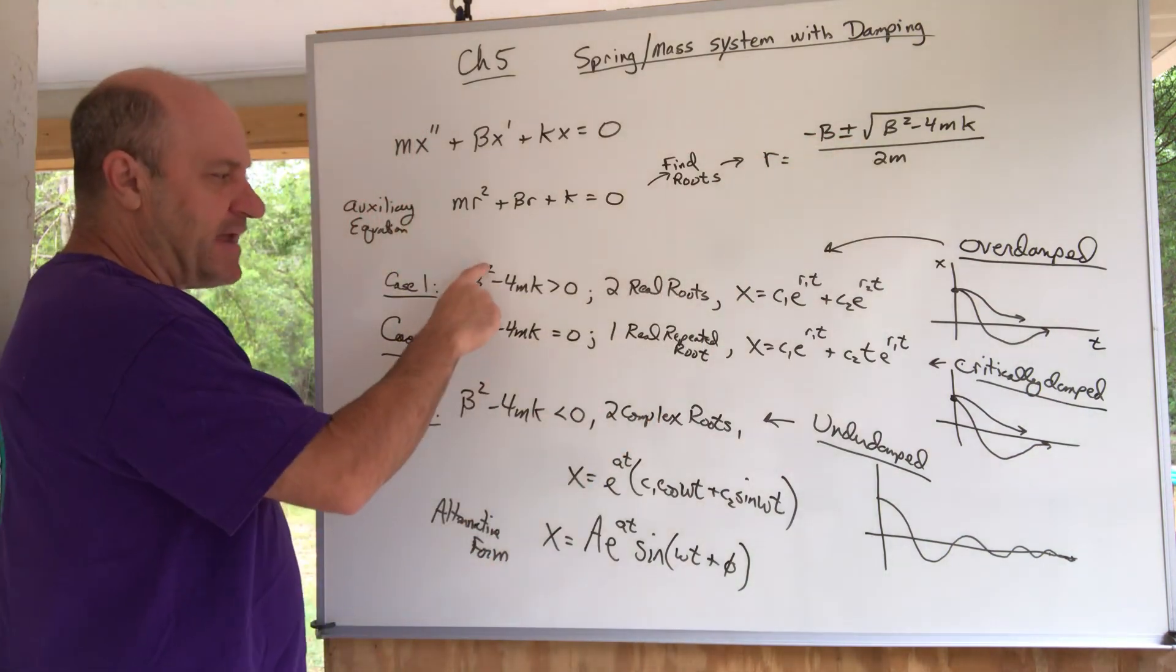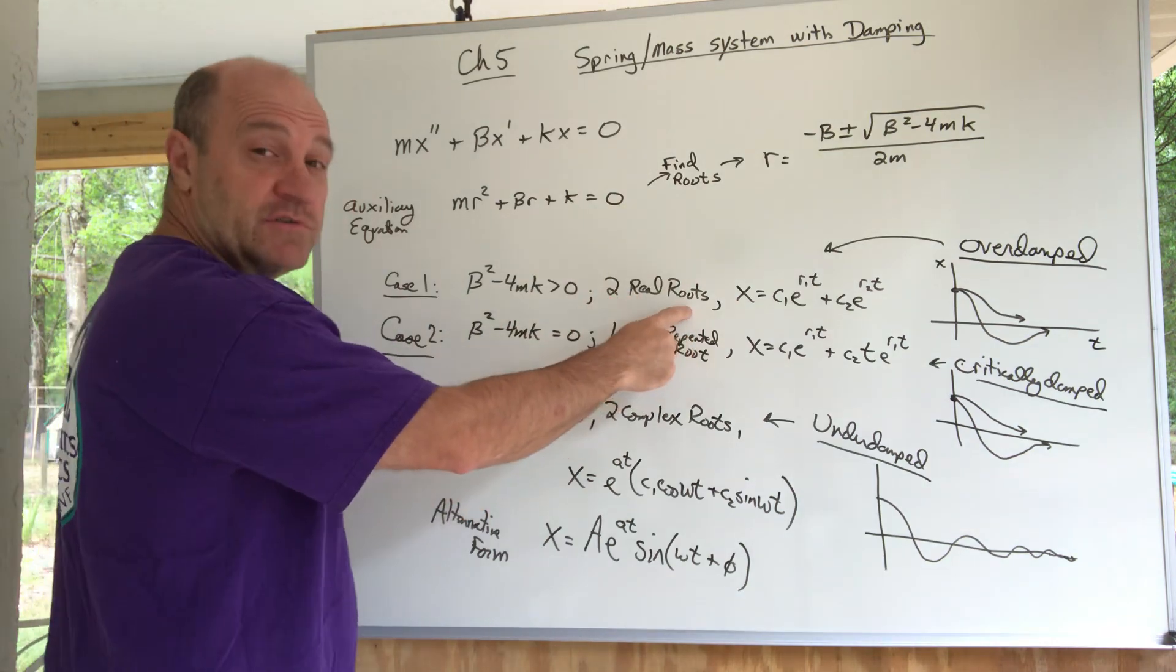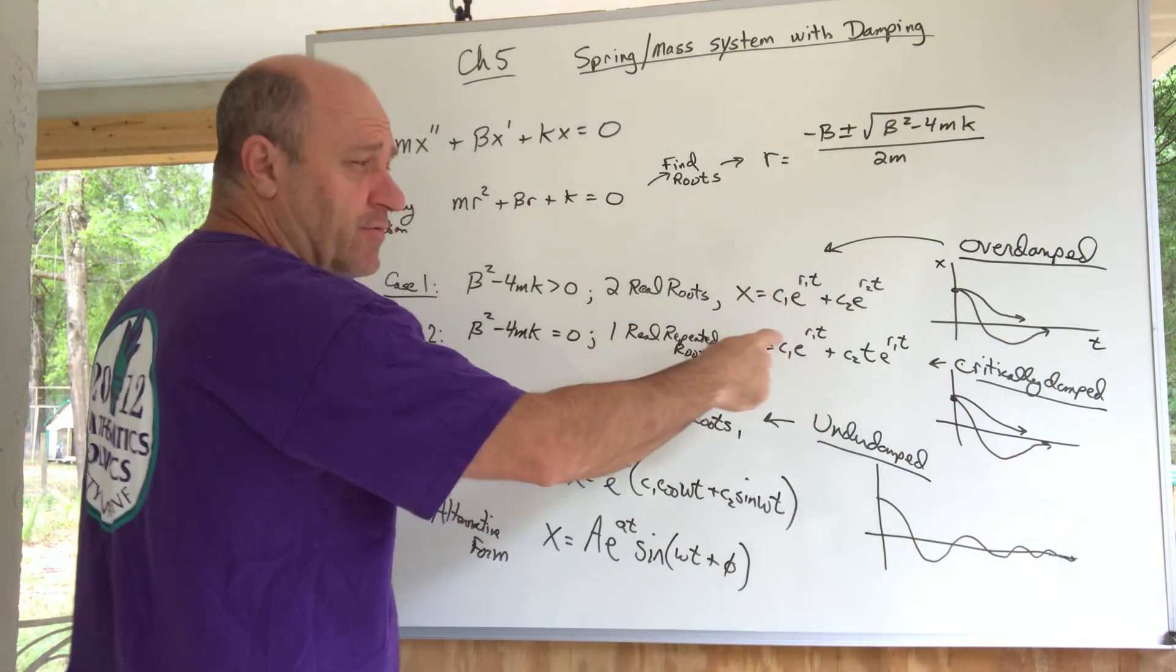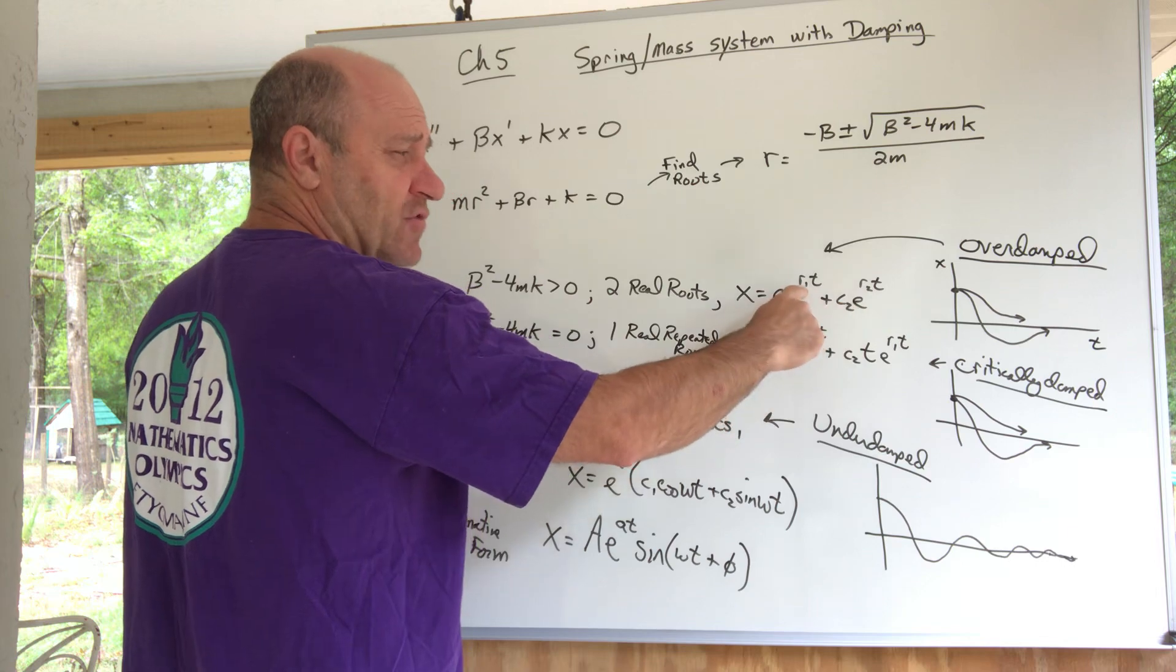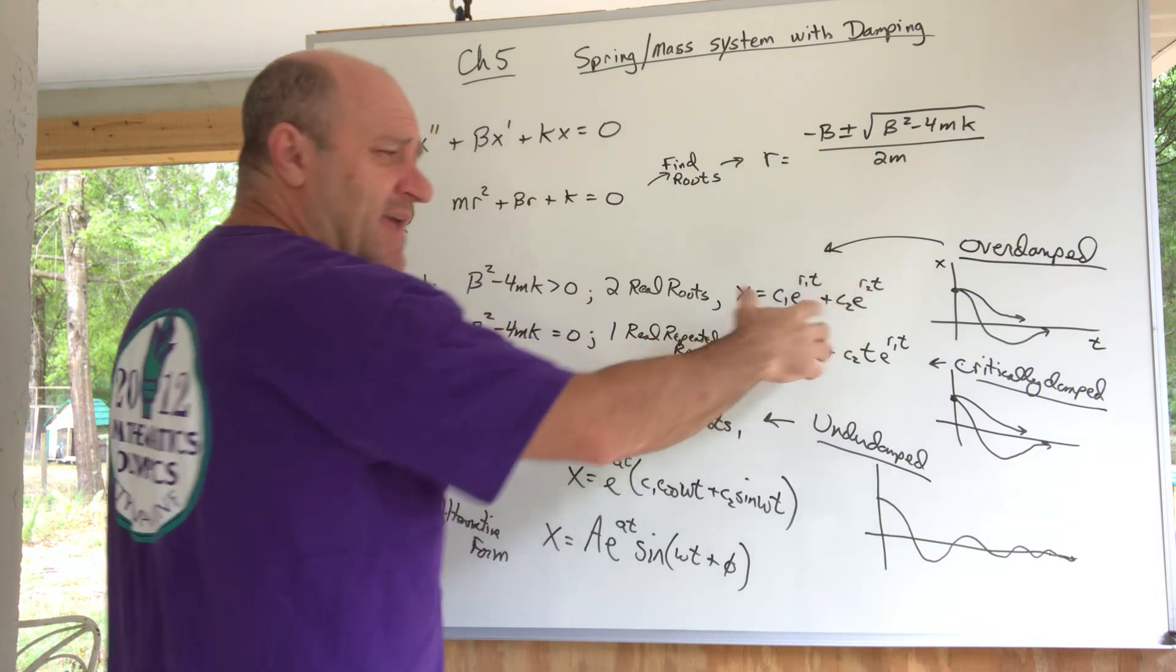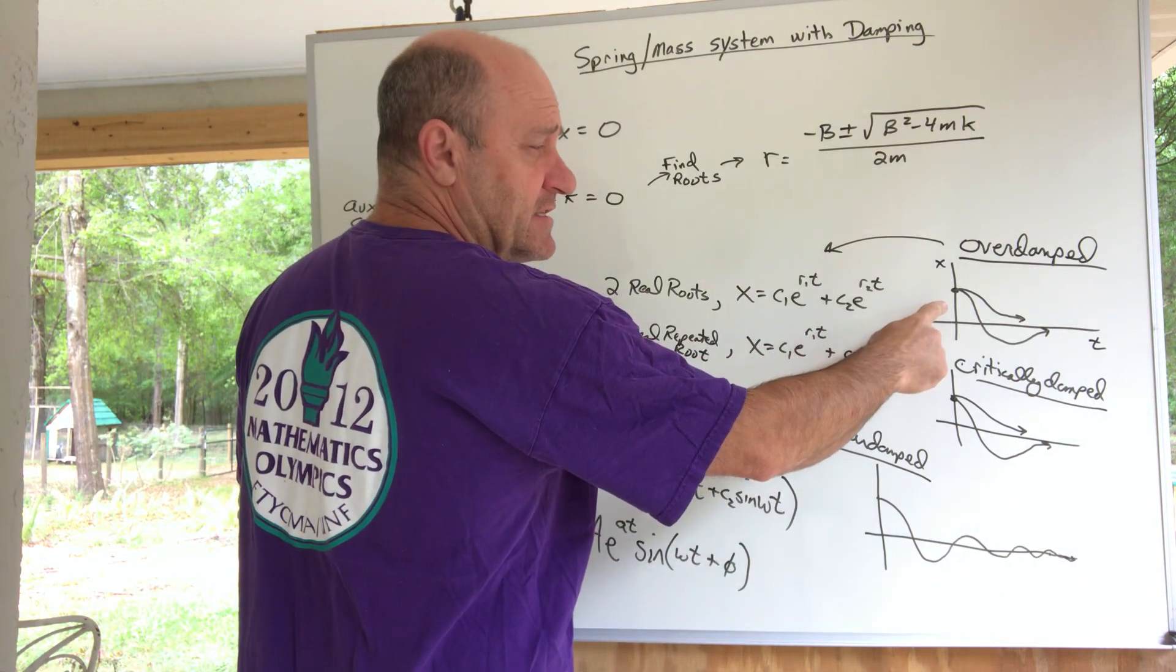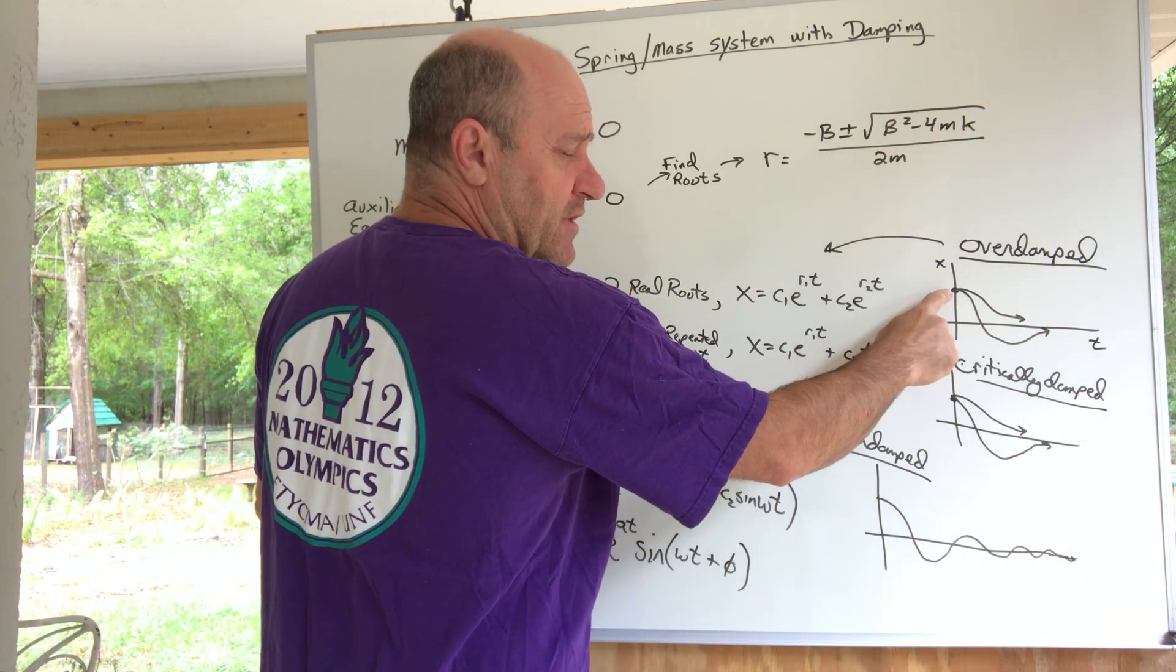If the discriminant of the quadratic formula, beta squared minus 4mk, is positive, that's going to lead to two real roots. If you have two real roots, you know how to write your answer. I called the roots r1 and r2, and you write your answer like this.